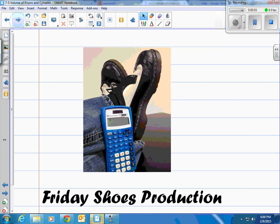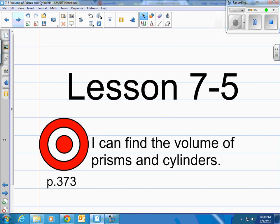This is a Friday Shoes production. This is lesson 7-5 on page 373. Our target: I can find the volume of prisms and cylinders.